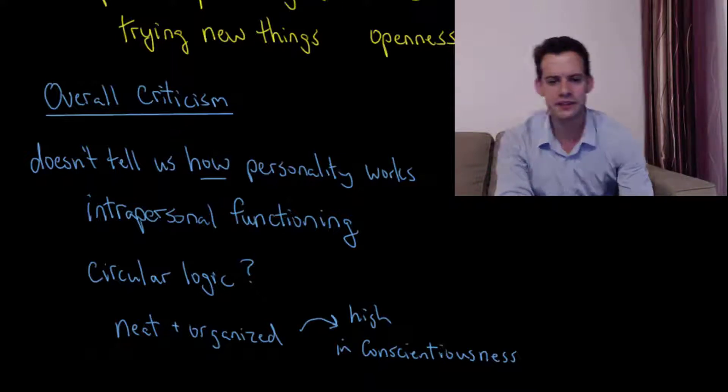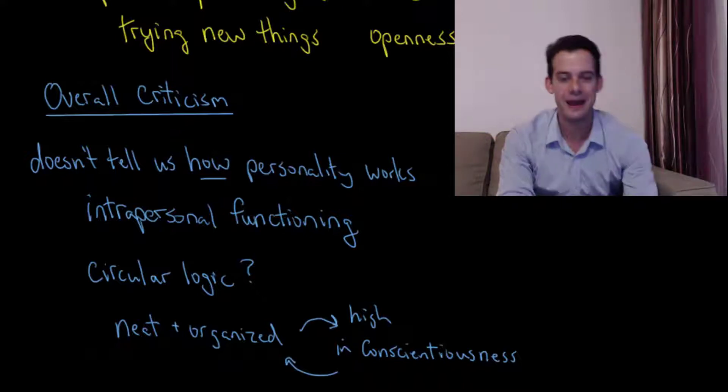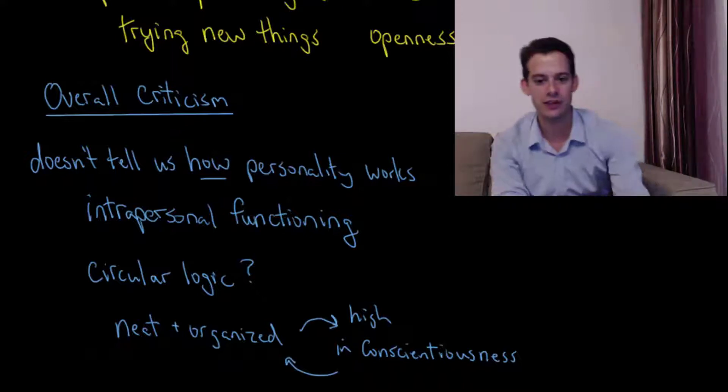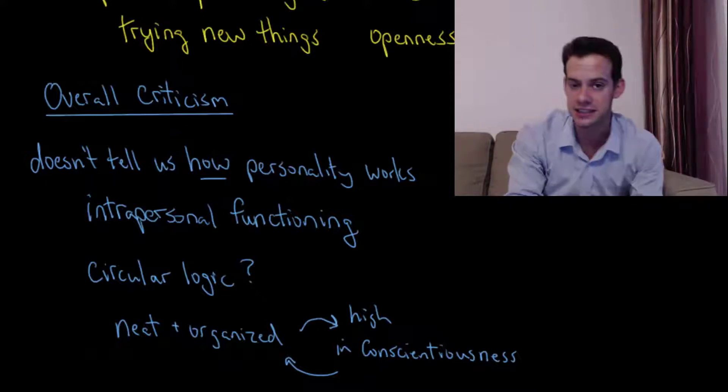Then we ask, well, why is it that Jill is high in conscientiousness? Well, because she's very neat and organized. She has these behaviors. That's the explanation for why she's high in conscientiousness is because she's very neat and organized and she's very neat and organized because she's high in conscientiousness. It's not really explaining what's causing her to be very neat and organized or what's causing her to be high in conscientiousness.